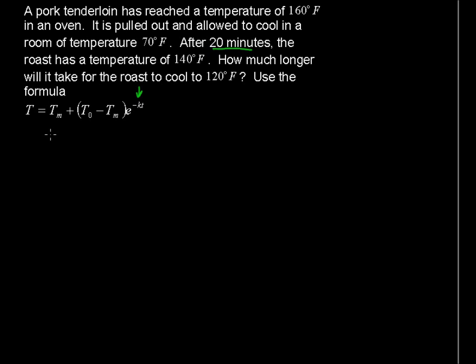So let's plug in what we do know. After 20 minutes, the roast has cooled down to 140 degrees. That equals the room's temperature of 70 degrees, plus the difference, that's T sub zero minus T sub M.